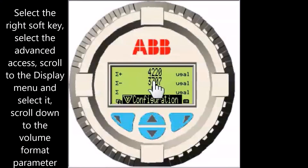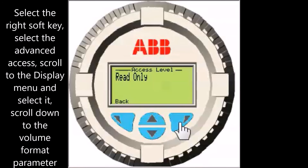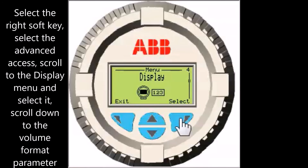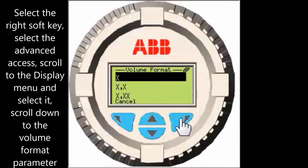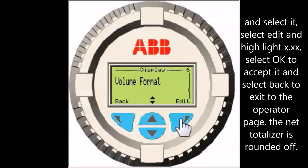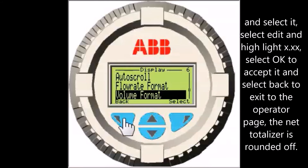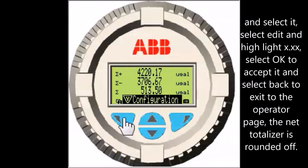Select the right soft key and select the advanced access. Scroll to the display menu and select it. Scroll down to the volume format parameter and select it. Select edit and highlight two decimal places. Select OK to accept it and select back to exit to the operator page. The net totalizer is now rounded off correctly.